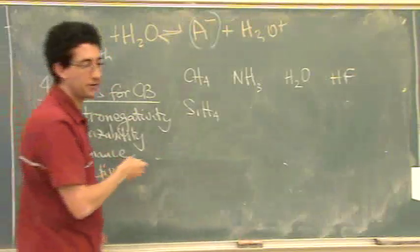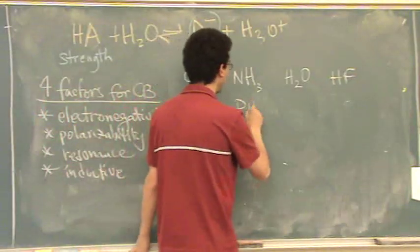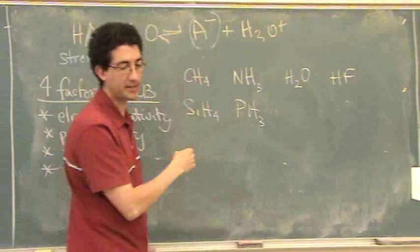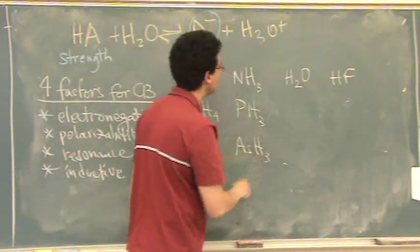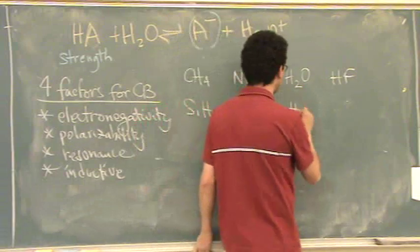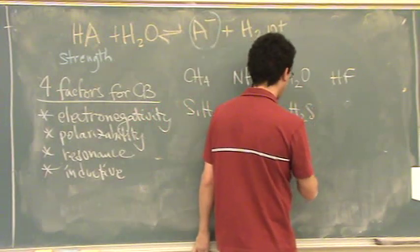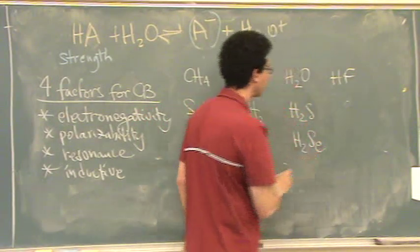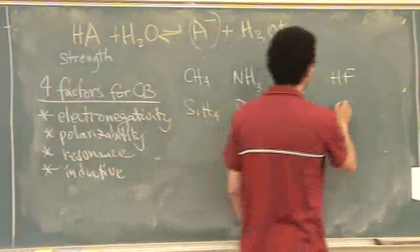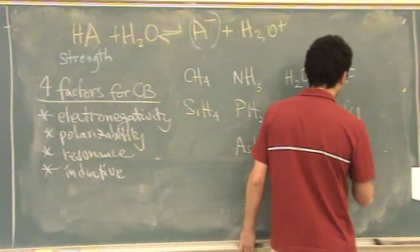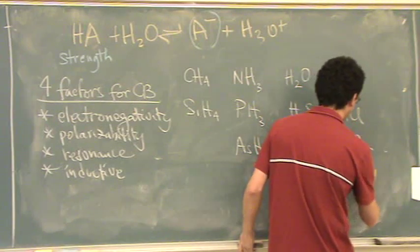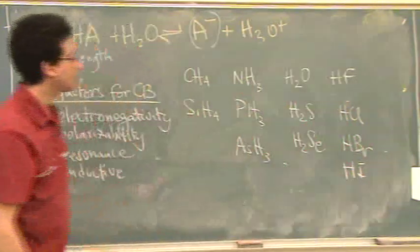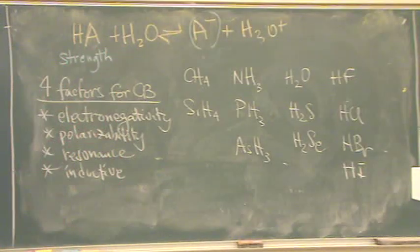We can go down: SiH4, go down here PH3, you go down as far as you feel like, AsH3. Go down from oxygen to sulfur if you want, H2S, you go down to selenium if you want, H2Se. For F, you can go down to HCl, HBr, however far you want to go, HI, etc. Those are all the atoms with the hydrogens on them.